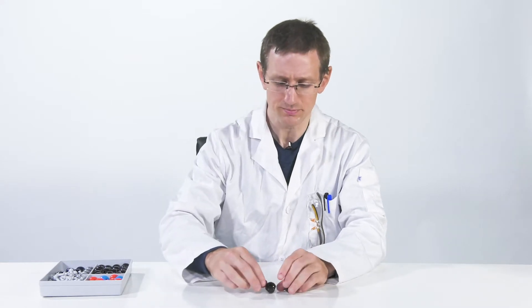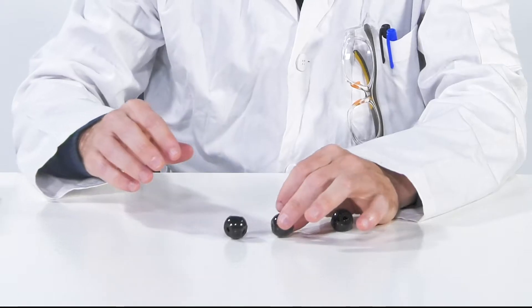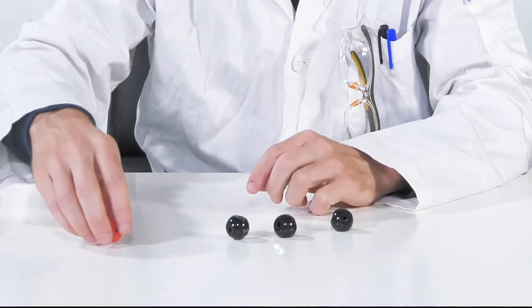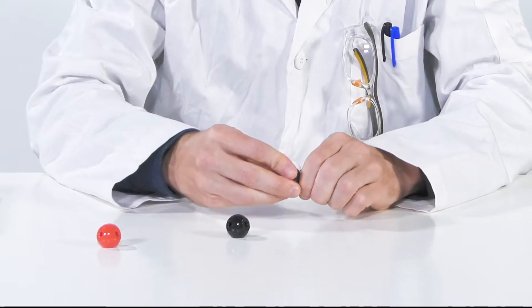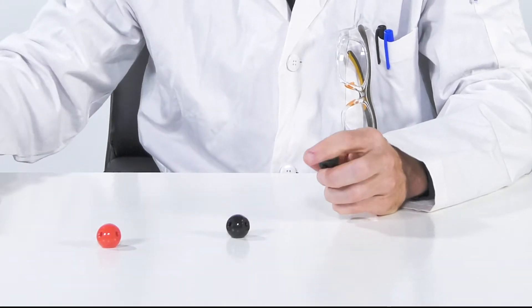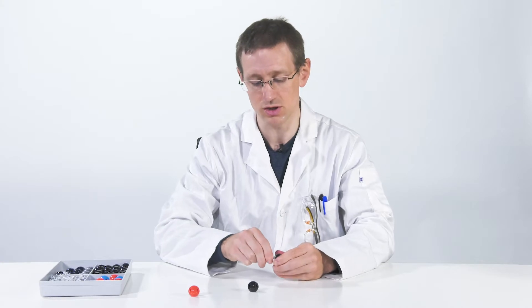So molecular kit, these represent atoms. The black ones are carbons, the red ones are oxygens, and they give us a rough idea of how the small world of atoms actually look.